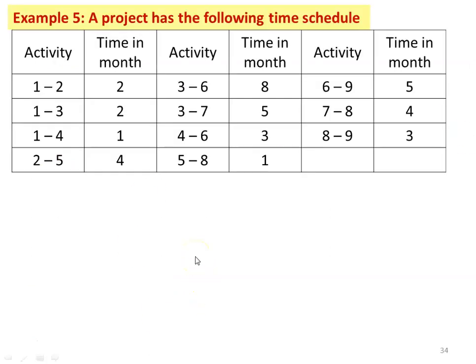We take Example number 5. A project has the following time schedule: activity 1 to 2 is 2 months, 1 to 3 is 2 months, 1 to 4 is 1 month, 2 to 5 is 4 months, 3 to 6 is 8 months, 3 to 7 is 5 months, 4 to 6 is 3 months.